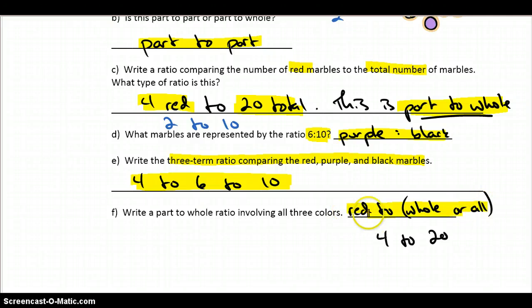Finally, a ratio involving all three colors. We could say red to everything. Red to all, red to whole. Would be something like 4 to 20. You could use purple. You could say that's 6 to 20. You could use the black. You could say 10 to 20. Or we could use everything. We could say 4 to 6 to 10 to 20, right? We've got part-to-part-to-part-to-whole. Any of those would work.